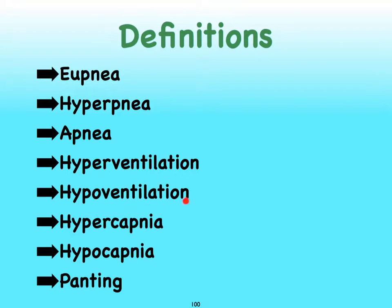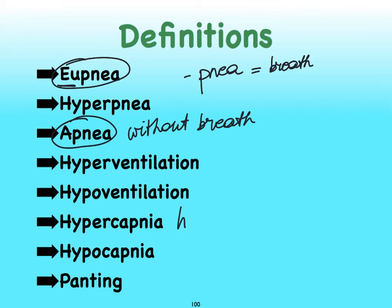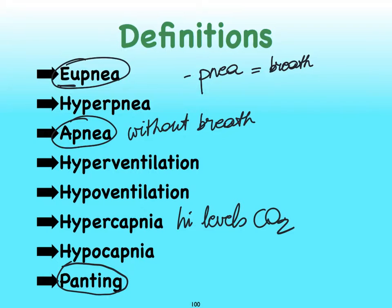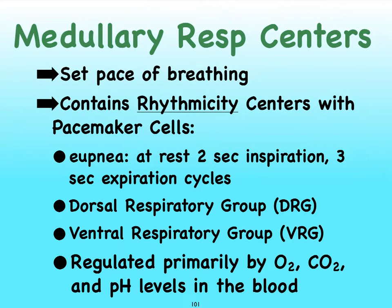Hypoventilation means that we're not blowing off enough carbon dioxide. Hypercapnia refers to high levels of carbon dioxide, while hypocapnia is just the opposite. Panting is typically the rapid breathing that you see in animals, which we don't typically see as much in humans. In our brainstem, we have respiratory centers in the medulla and in the pons. We're going to start with the medullary respiratory centers because they're responsible for setting the pace of our breathing.